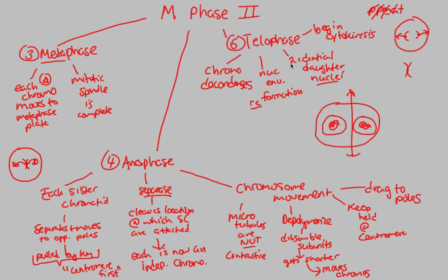Telophase ends with two identical but separate daughter nuclei. We started with just one nucleus, and now we have two identical but separate daughter nuclei. We have to literally split the cell in half, and we'll talk about that in the next video. Overall, we've now completed the mitosis portion of M-Phase. M-Phase consists of mitosis and cytokinesis. Mitosis has five parts: Prophase, Prometaphase — which we covered previously.